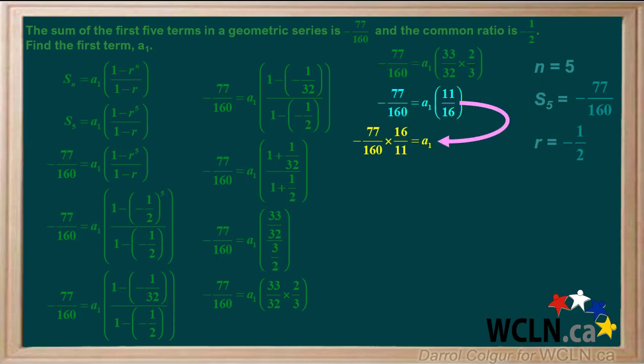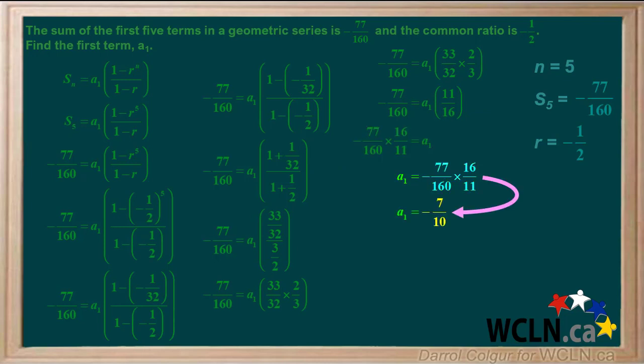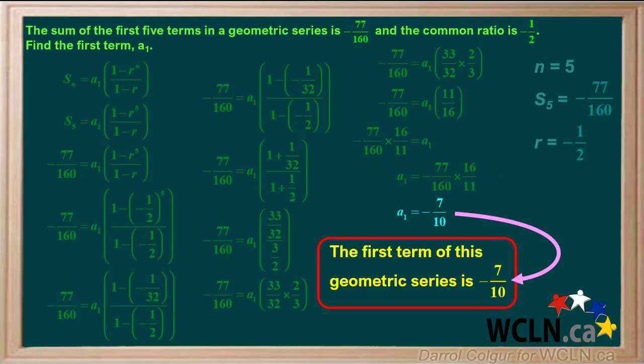We'll isolate a1 by multiplying both sides of the equation by 16/11. Reversing the equation to put a1 on the left side, negative 77 over 160 times 16/11 reduces to negative 7/10. So we can state that the first term of this geometric series is negative 7/10.